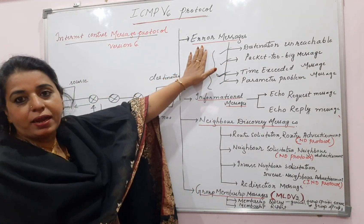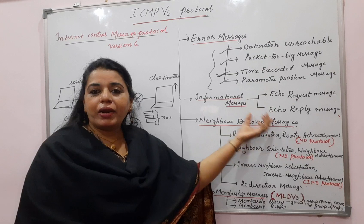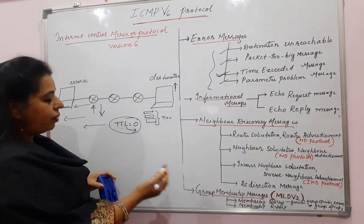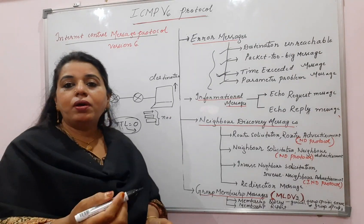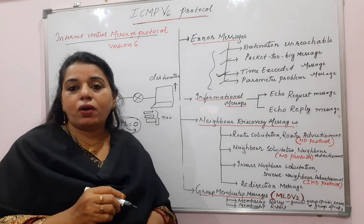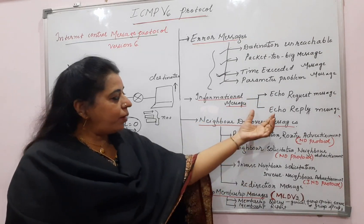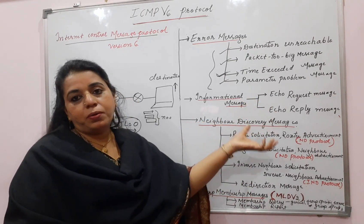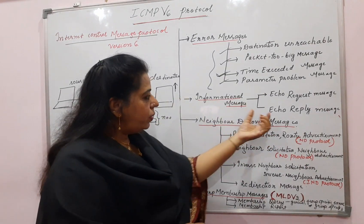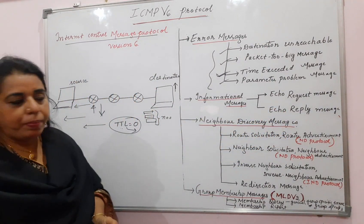The second main category is informational messages. These two were also present in ICMPv4: echo request message and echo reply message. At any point in the network, if a host wants to check whether another node is active or if the interface is up, it sends an echo request message. If the reply comes back, the interface is active and the node is active - that reply is called the echo reply message.